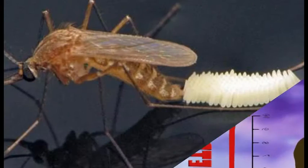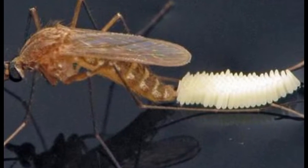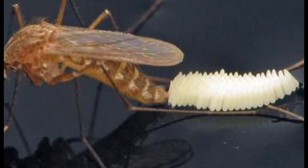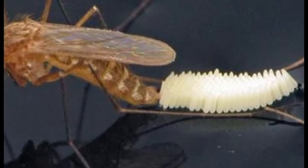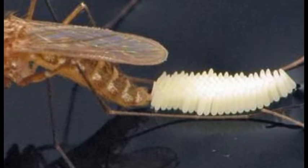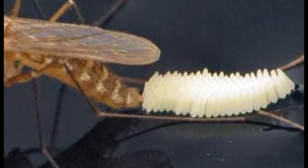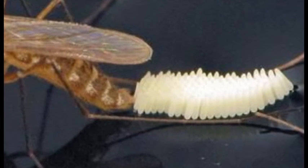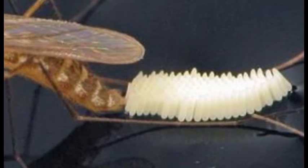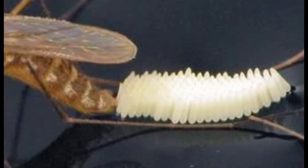La hembra pone de 50 a 200 huevos en cada postura. El huevo puede estar hasta un año si hay sequía, y al llover o humedecerse comienza su evolución.